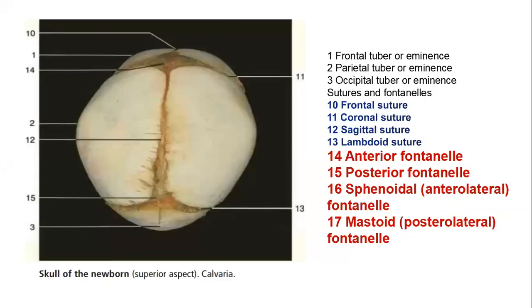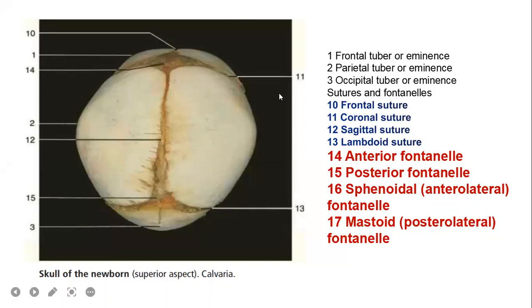This is a skull of a newborn. We have the two parietal bones, and the junction marked as 12 is known as the sagittal suture. The part labeled 14 is the anterior fontanelle, and the part labeled 15 is the posterior fontanelle. As we move on, we shall check other fontanelles: the sphenoidal or anterolateral fontanelle, and the mastoid posterolateral fontanelle, mainly seen on the lateral aspect of the skull.